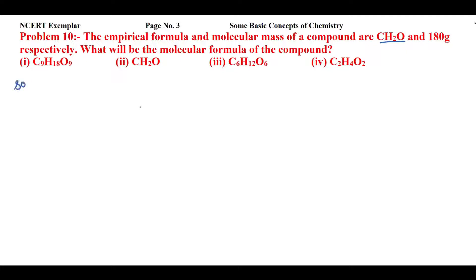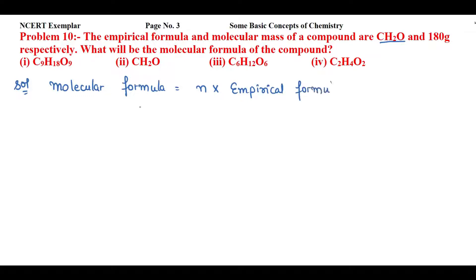To solve this, we use the relation: molecular formula = N × empirical formula. We have the empirical formula CH2O, but we don't have the value of N. N is any whole number which, when multiplied with the empirical formula, gives us the molecular formula.